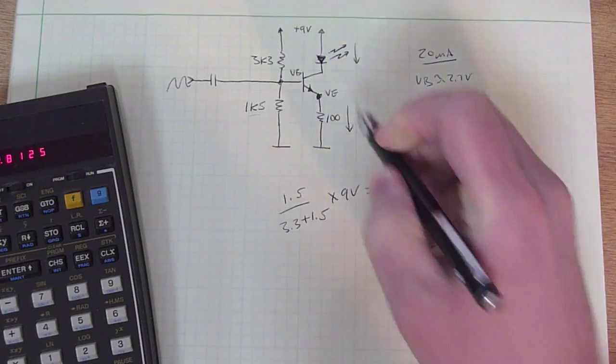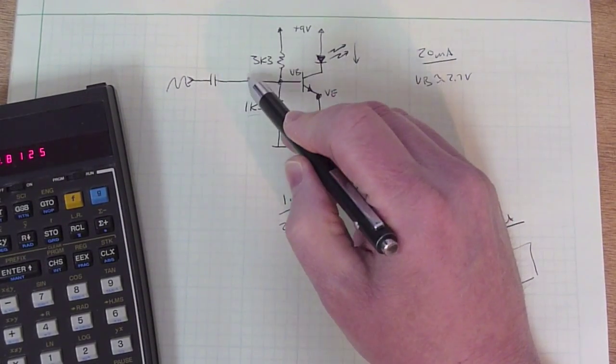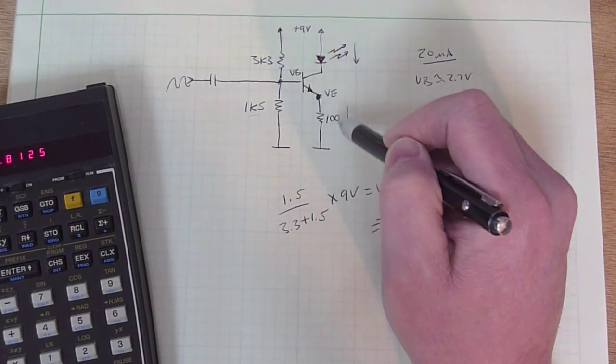So this resistor sets basically the modulation depth for a given input AC voltage, and these two resistors set the current when there's no input.